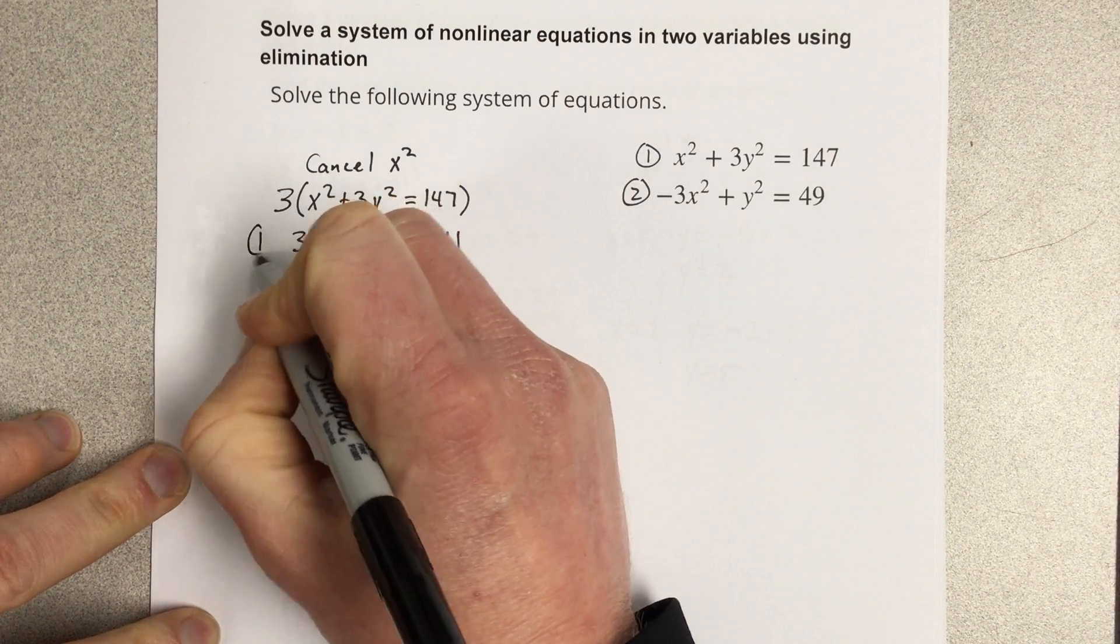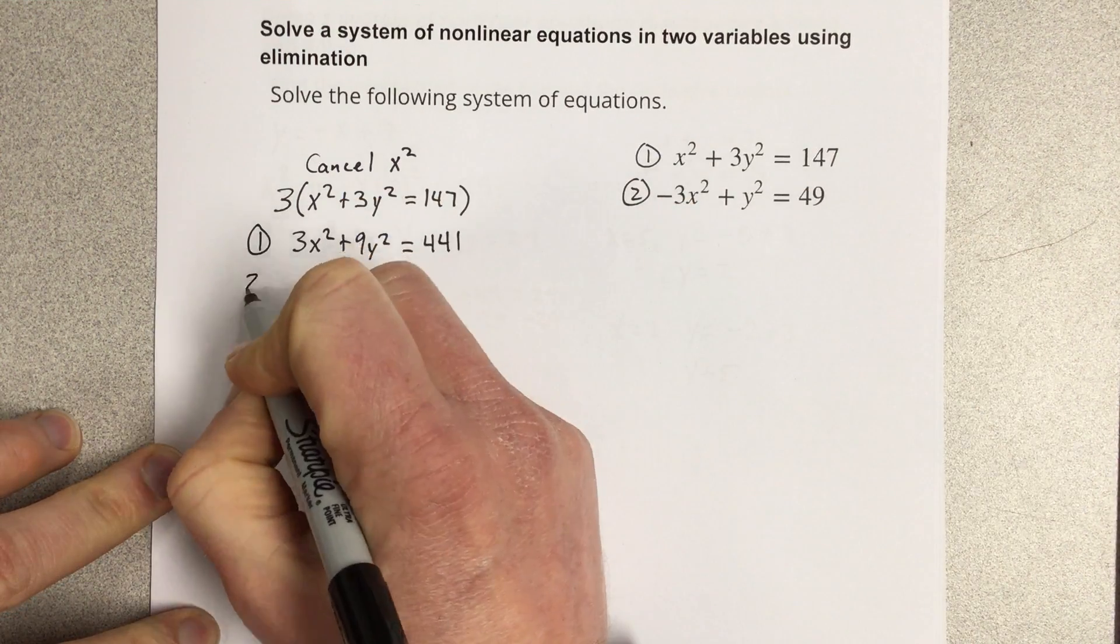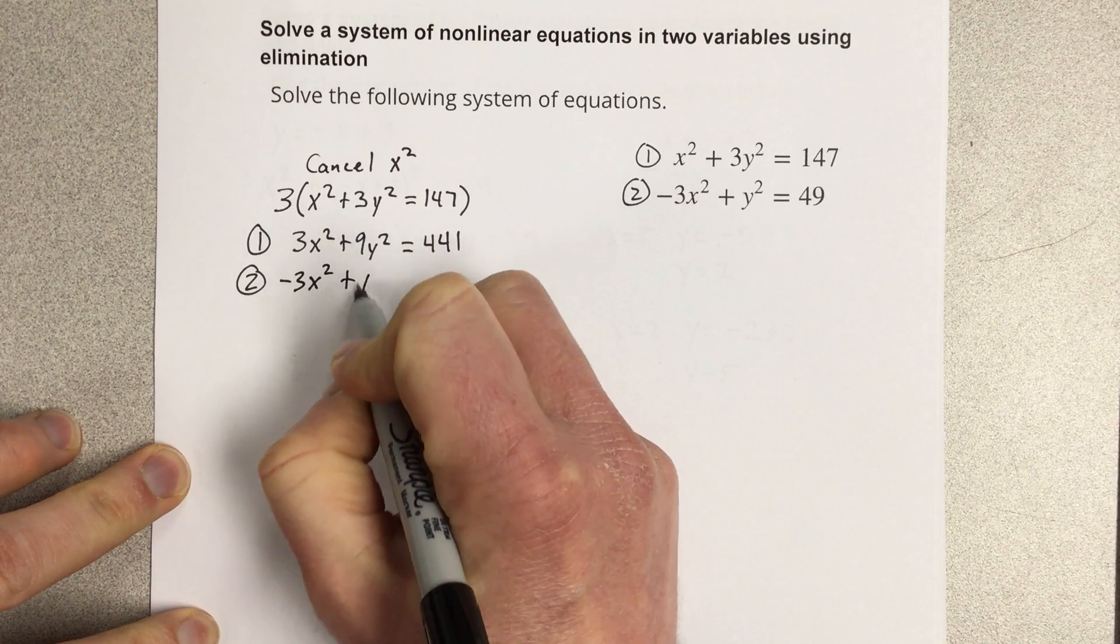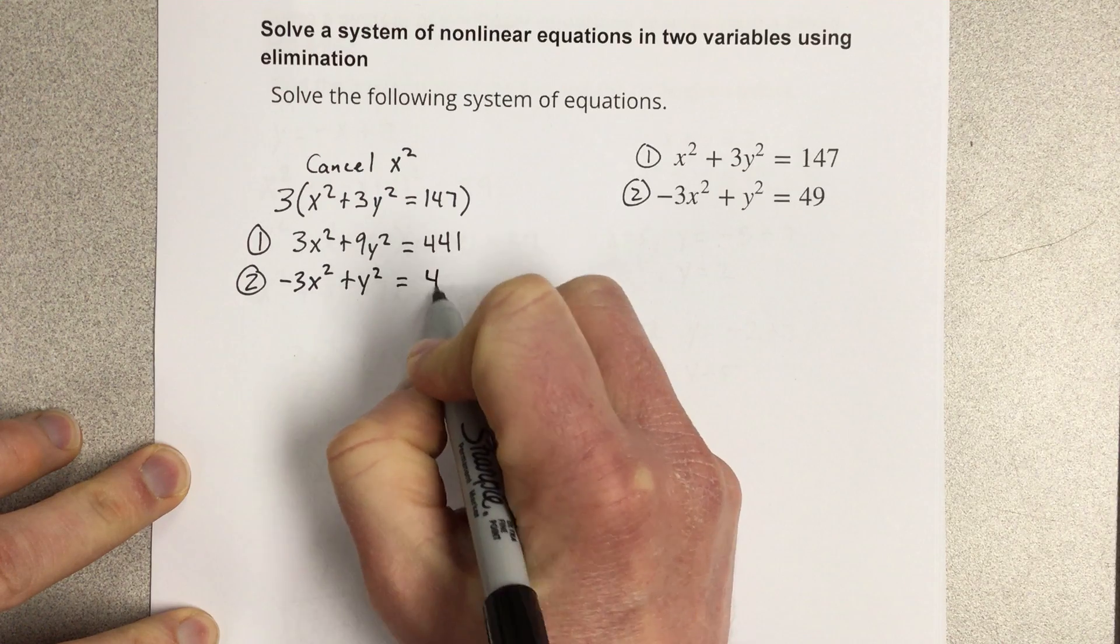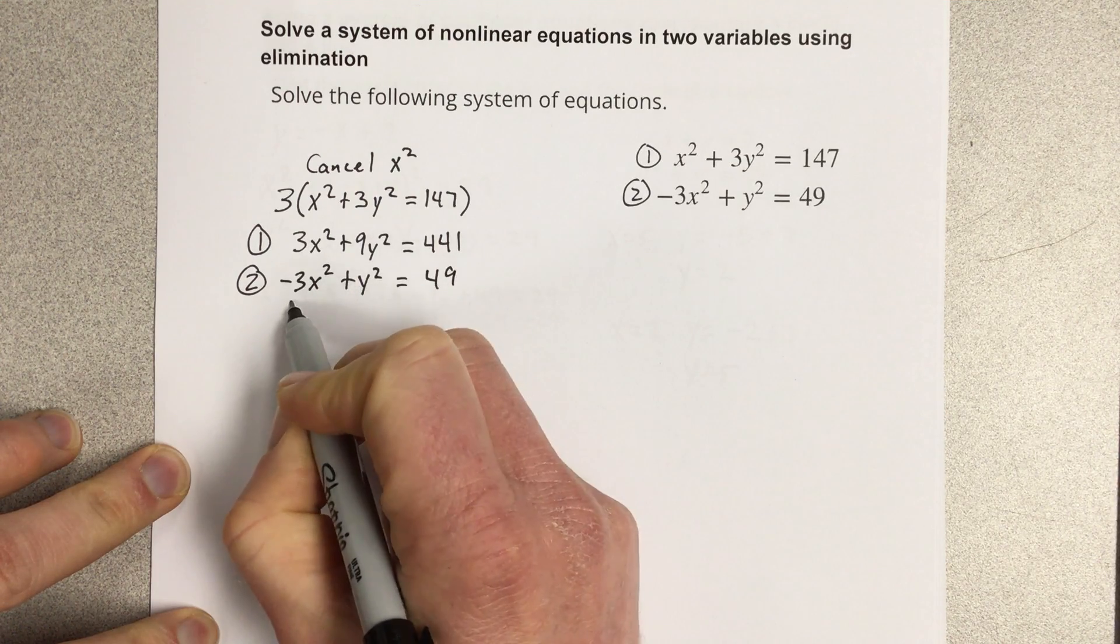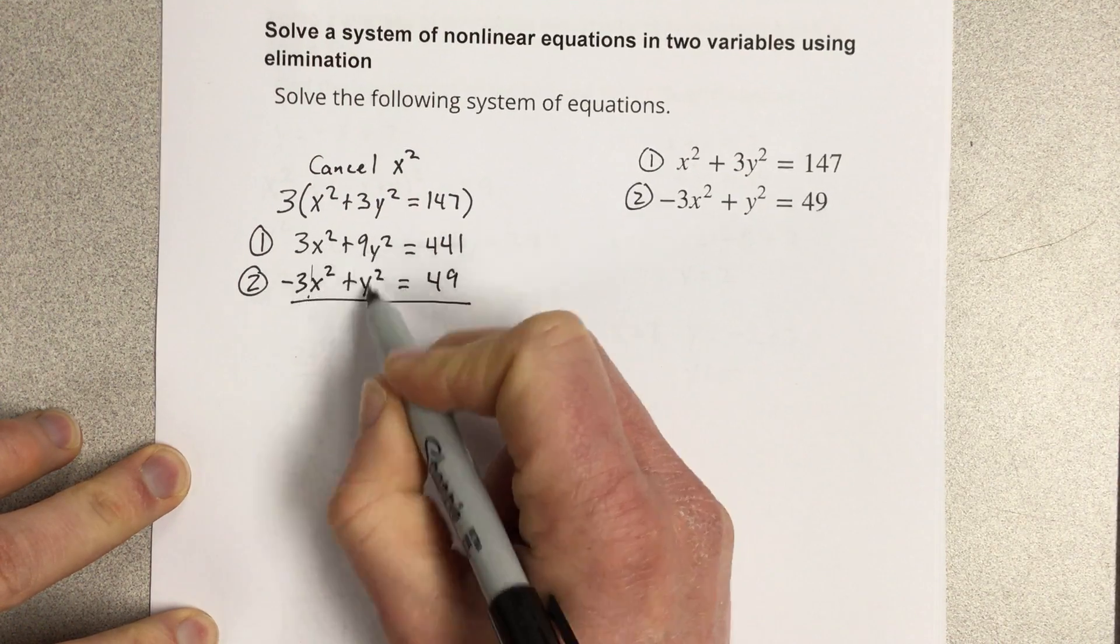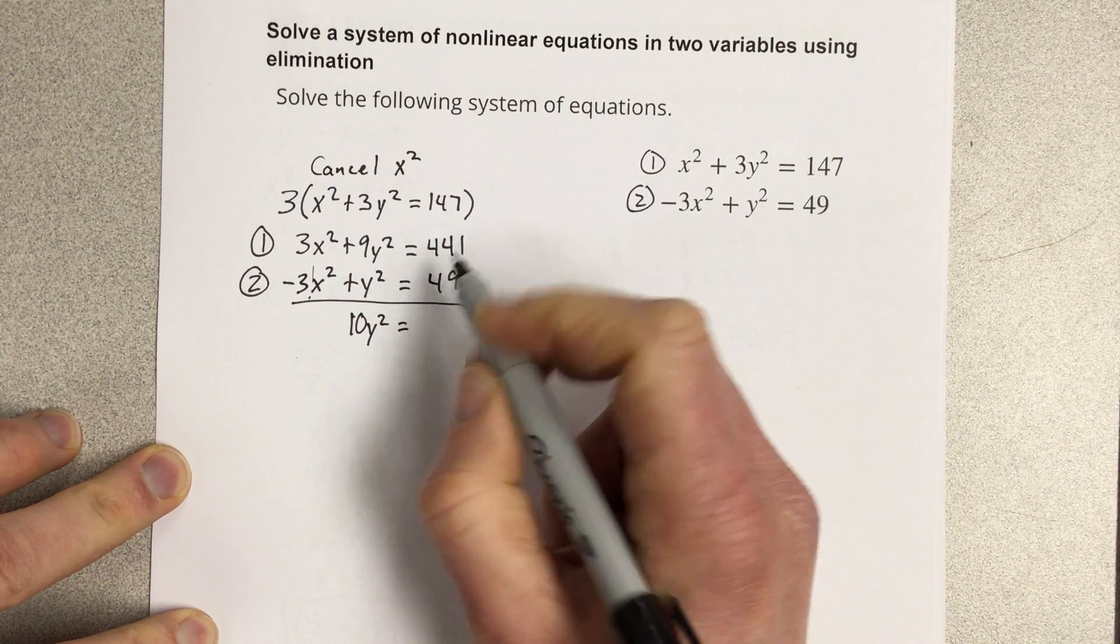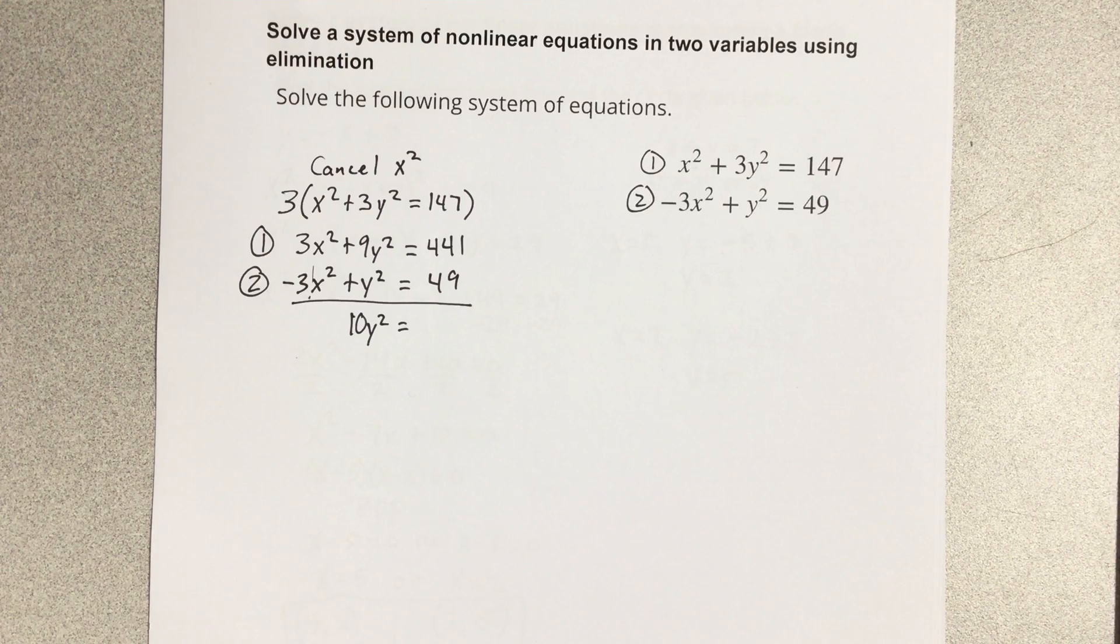This is equation 1. I'm going to now set equation 2 underneath equation 1 and then add them together. When you add these together, the x² terms cancel, that's 10y² equals, add those together and you get 490.